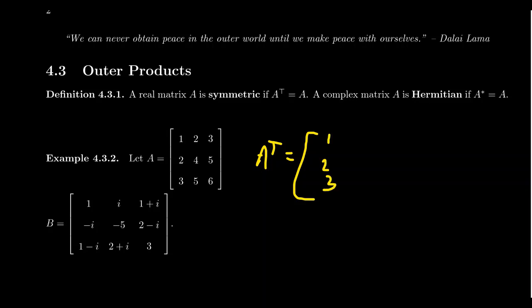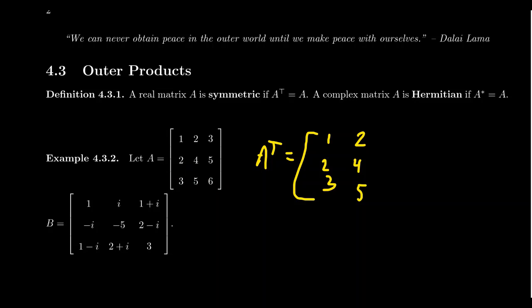If I take the second row of A, that becomes the second column of A transpose, so you get 2, 4, 5. And then if you take the third row of A, its rows become a column, so we get 3, 5, 6. And you'll notice that this matrix I just drew on the screen is identical to the matrix you started with.